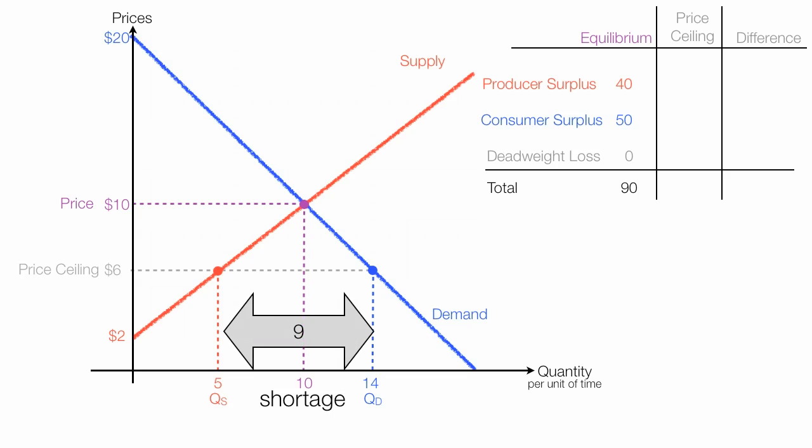After the price ceiling, producer surplus has been reduced. It used to be this, and now it is this. Producer surplus is this new area of this triangle. So I take 6 minus 2, which is 4, and that's the height of the triangle. The base of the triangle is 5, which is that distance. So the area is 10. Producer surplus has been reduced by 30, or reduced by this amount right here.